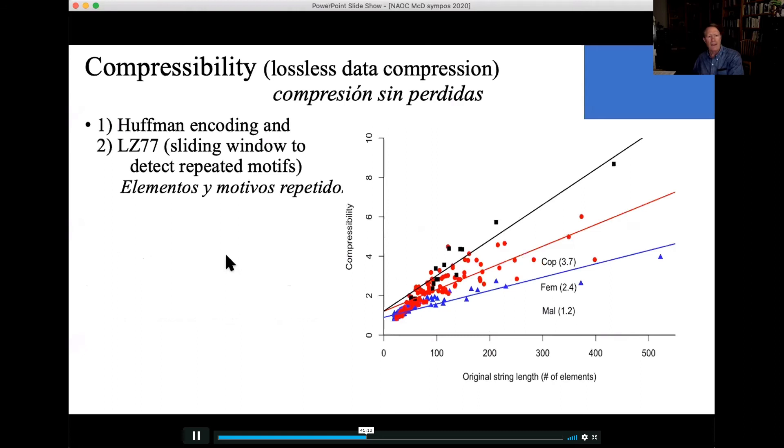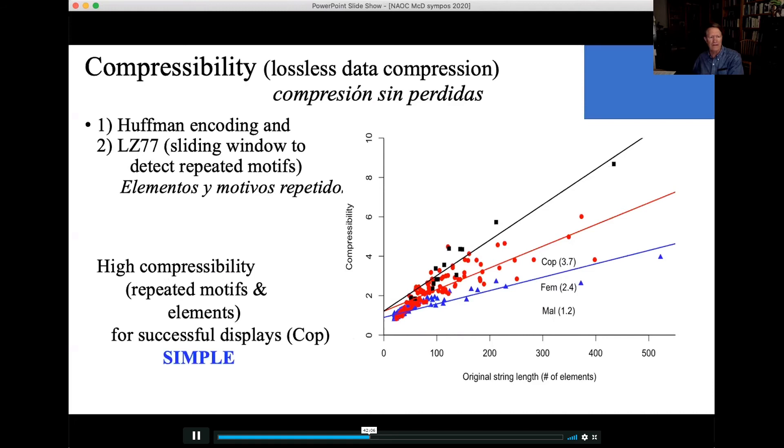I want to introduce another measure, compressibility. It's really important in internet transmission of data of any sort: images, text, sound, the bad music you're hearing in this talk. Huffman encoding, I can't talk about, but I'd love to tell you about it. A really elegant thing by a master's student at MIT years ago. So, Lempel-Ziv added another piece, sliding windows that would detect repeated motifs, and we think this gives it a bit of an edge over entropy. Cop bouts, very compressible because of repeated elements and repeated motifs. Male bouts, the blue line, not very compressible because they're diverse, random, sort of slightly disorderly. So, high compressibility, repeated motifs and elements for successful displays, they're simple.